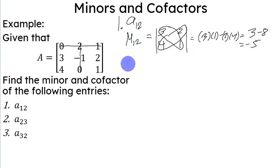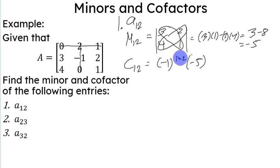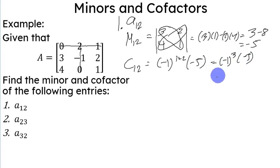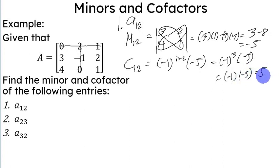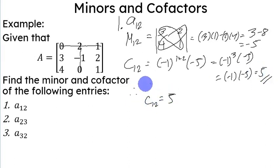The cofactor of A sub 1 2 is negative 1 raised to 1 plus 2, times negative 5. Negative 1 raised to 3 is negative 1, so negative 1 times negative 5 gives us positive 5. Therefore, the minor of A sub 1 2 is negative 5, and the cofactor of A sub 1 2 is positive 5.